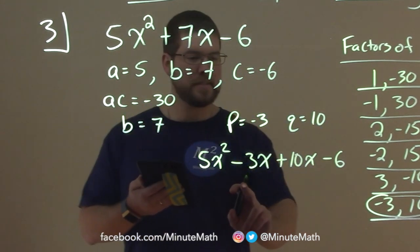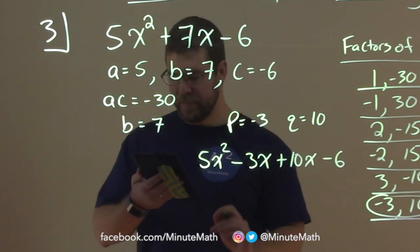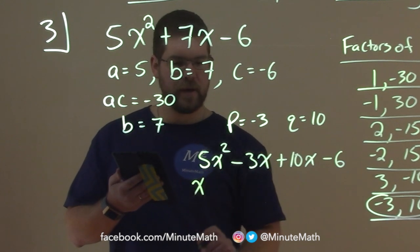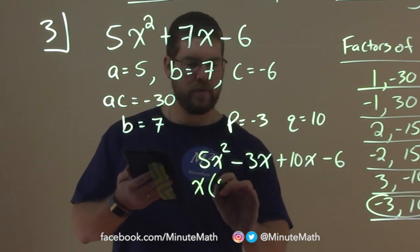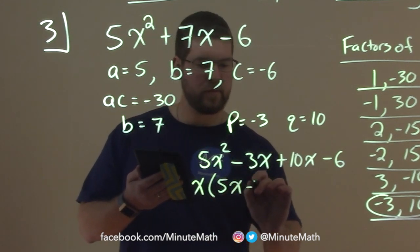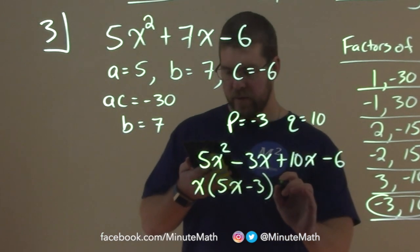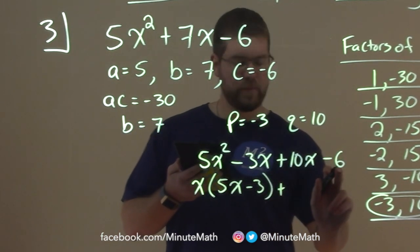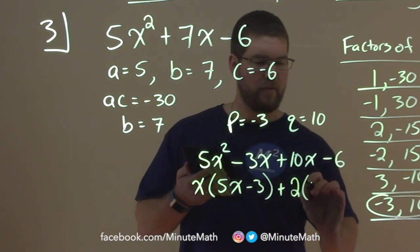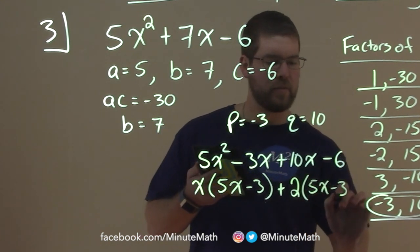So, now we're going to pull out the GCF of each section here. We have a common x in both parts, and we're left with 5x minus 3. And then here, we can pull out a 2 from both parts, and we have 5x minus 3.